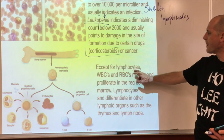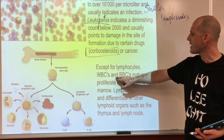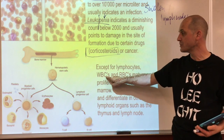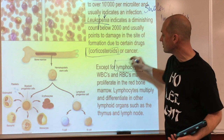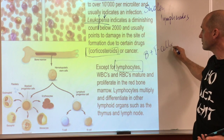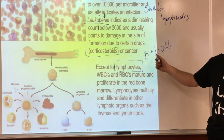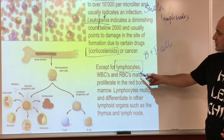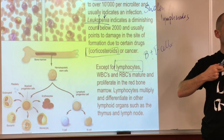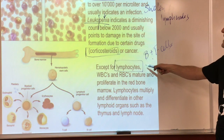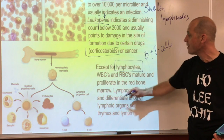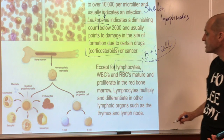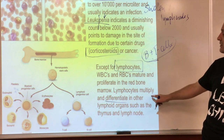Most white blood cells and red blood cells mature and proliferate in the red bone marrow. Some white blood cells - namely lymphocytes, the B and T cells - are made in the red bone marrow but mature in the thymus, which is right behind the sternum. HIV causes T cells to go down, and AIDS is when the resulting disease takes hold.